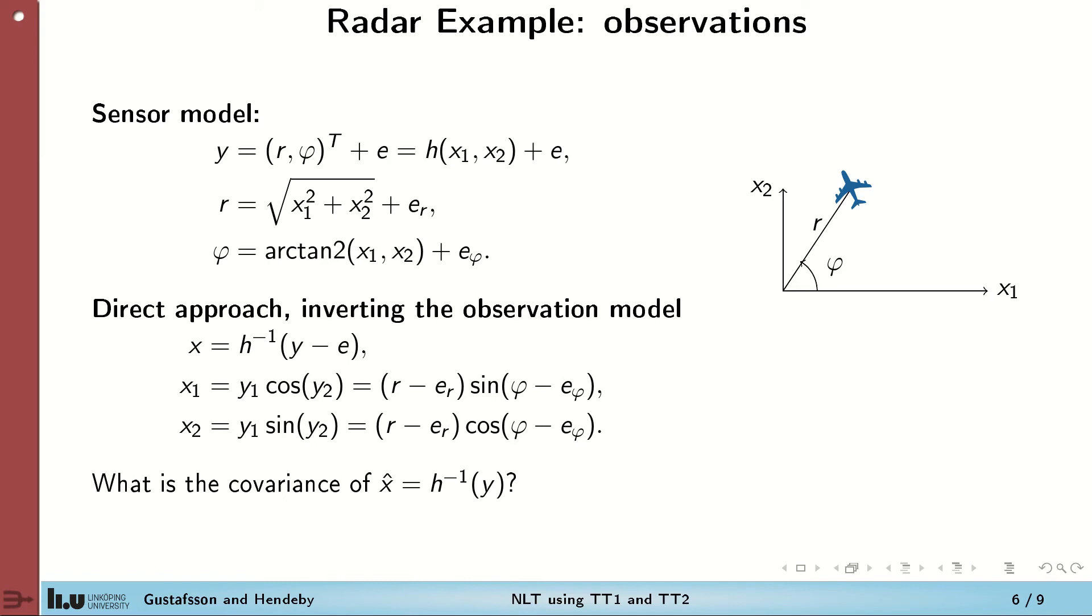The sensor measures the range and the bearing to the target, and the measurement function can be inverted given these expressions. The question here is, what is the distribution of the estimate x hat given a measurement? Where x in this case is the Cartesian position of the target.